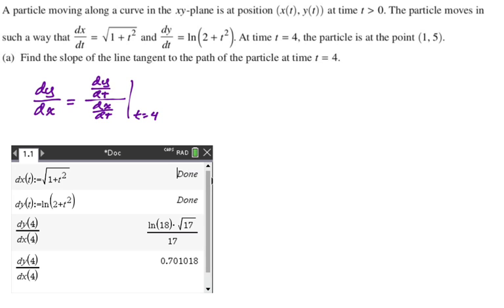I defined dx of t, I defined dy of t, and then I'm just doing dy of 4 over dx of 4. So the exact value is natural log of 18 over 17. I prefer to always use decimals on these things, so I'm going to say approximately 0.701 and move on. Next part.